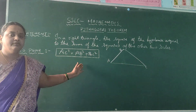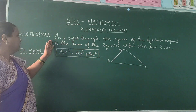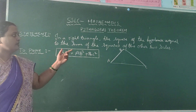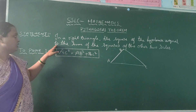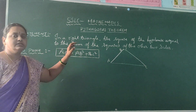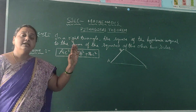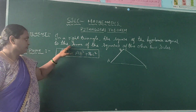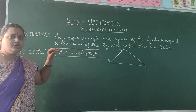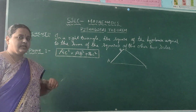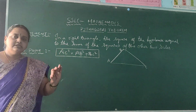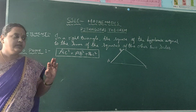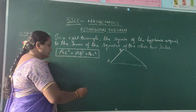Let me read the statement of the theorem. In a right angle triangle, the square of the hypotenuse is equal to the sum of the squares of the other two sides. We should know when to use this Pythagoras theorem — always use it when it is a right angle triangle.